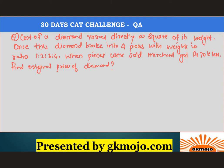Next question: the cost of a diamond varies directly as the square of its weight. Once the diamond broke into four pieces with weights in the ratio 1:2:3:4, the merchant got rupees 70,000 less. Find the original price of the diamond. Let the weight of the diamond be 10 units, so the cost varies as 10 squared.